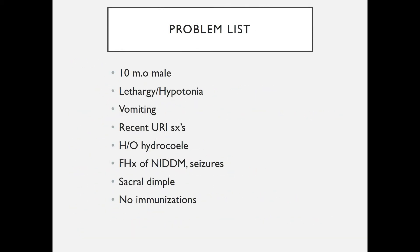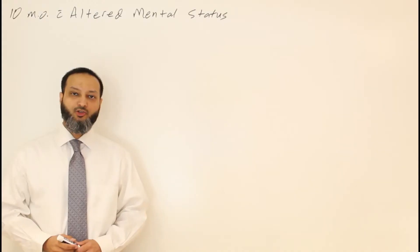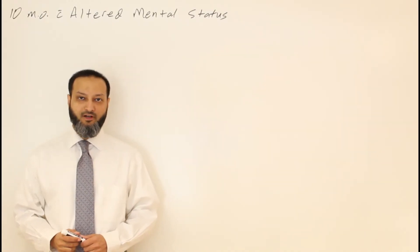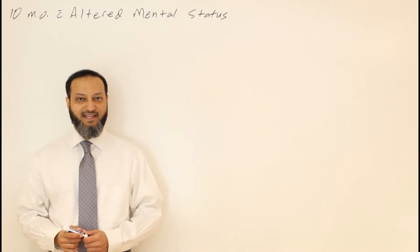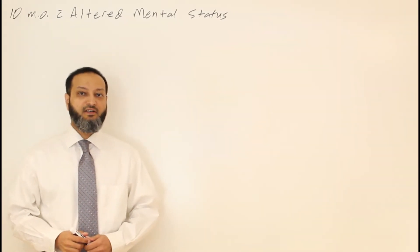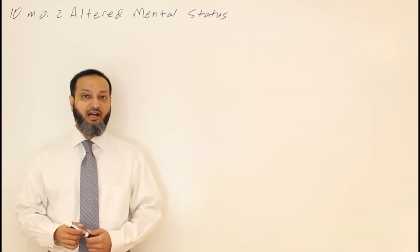To summarize our problem list, we have a 10-month-old male who is lethargic and hypotonic, has been vomiting, had a recent upper respiratory infection, has a history of a hydrocele, family history of non-insulin-dependent diabetes and seizures, has a sacral dimple on exam, and has not received any immunizations. In this case, we have a 10-month-old male coming in with altered mental status — basically encephalopathic given that he is lethargic and hypotonic. Let's go through the differential diagnosis of a 10-month-old presenting with altered mental status.